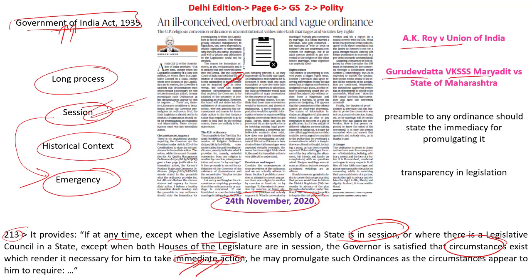Then we have another landmark judgment — Gurudev Dutta VKSSS Maryadeet versus the State of Maharashtra — where the Supreme Court reiterated that the dangers of unrestricted legislative powers to the executive can be abused. It states that such laws, although not unconstitutional, have the potential to be used in an unconstitutional form, so the executive requires checks and balances. The Supreme Court has said that subjective satisfaction is also open to judicial review. If there is malafide intent, such an ordinance can be reviewed and declared ultra vires the Constitution, rendering it void.